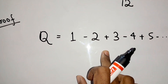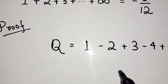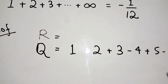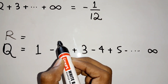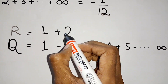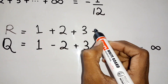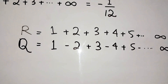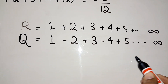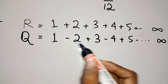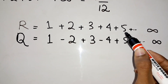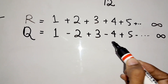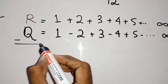Now we will take the series whose sum we have to find out — we name it R. So R equals 1 plus 2 plus 3 plus 4 and so on to infinity. Now what we will do is subtract both the series R and Q.